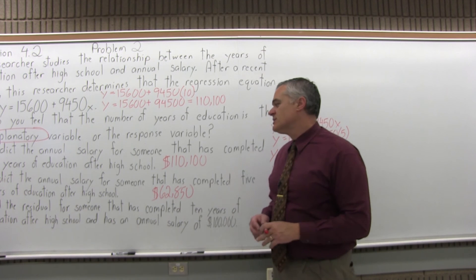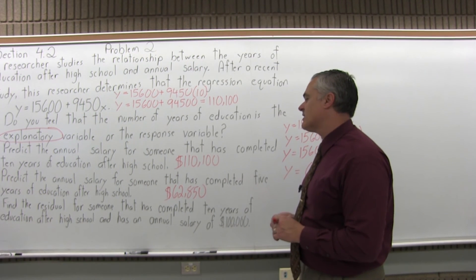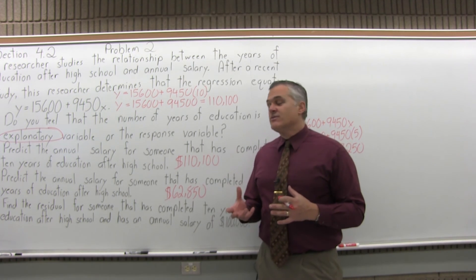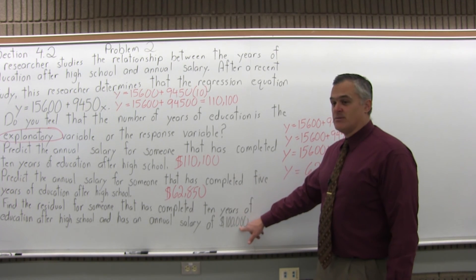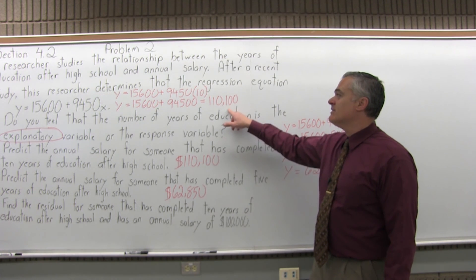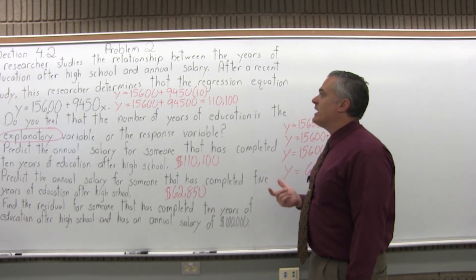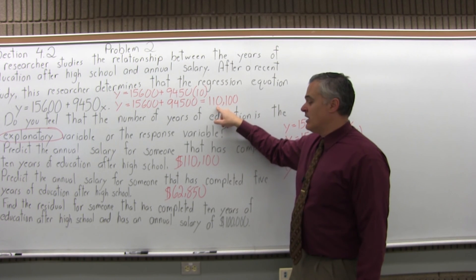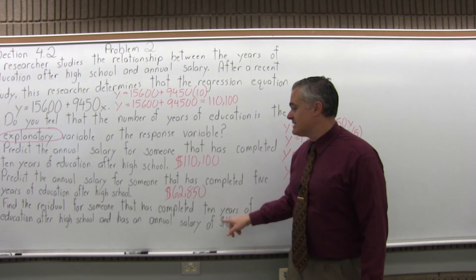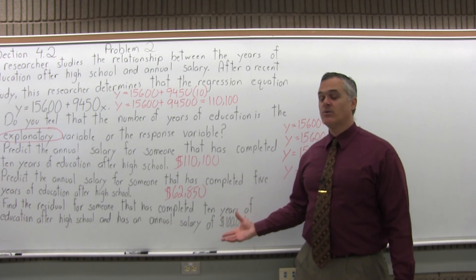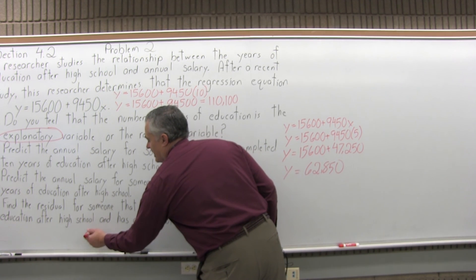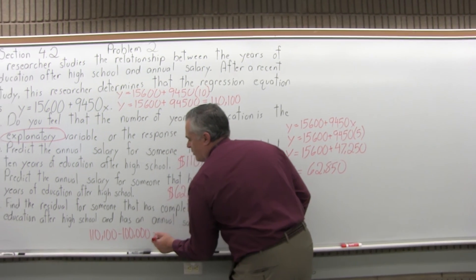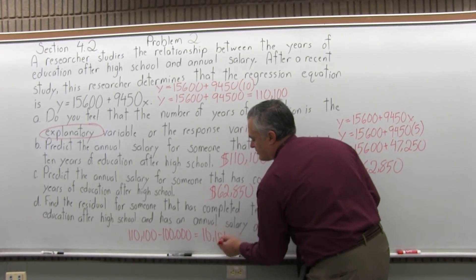Part D: find the residual for someone that has completed 10 years of education after high school and has an annual salary of $100,000. The residual is the difference between an actual data value and the predicted value based on your linear regression equation. We have a predicted salary of $110,100, but this actual person's salary is $100,000. So the difference, $110,100 minus $100,000, is $10,100 — that's the residual value.